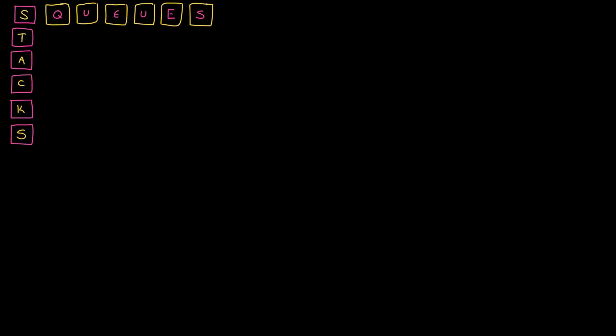Stacks and queues have a lot of things in common. They are both linear data structures in that you have one element and then another element and then another element. They are both flexible with their sizes, so you don't have to allocate them initially to have a size of like 50. You could just add elements as you go and then also shrink it down.